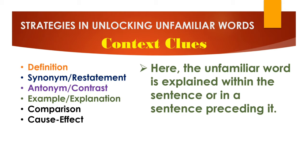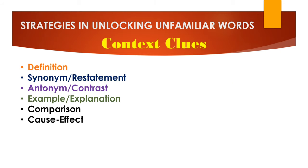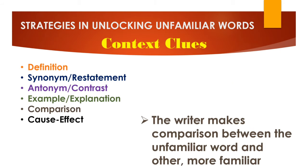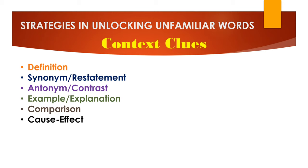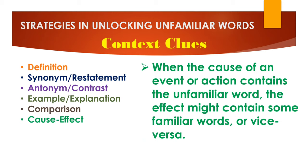Then we have explanation — the unfamiliar word is explained within the sentence or in a sentence preceding it. Next, comparison — the writer makes a comparison between the unfamiliar word and other more familiar words. Lastly, there's cause and effect — when the cause of an event or action contains the unfamiliar word, the effect might contain some familiar words, or vice versa.